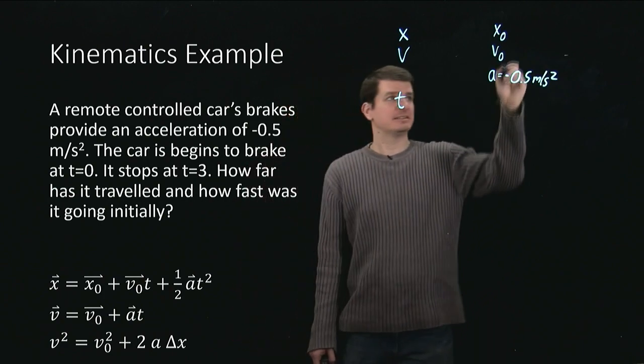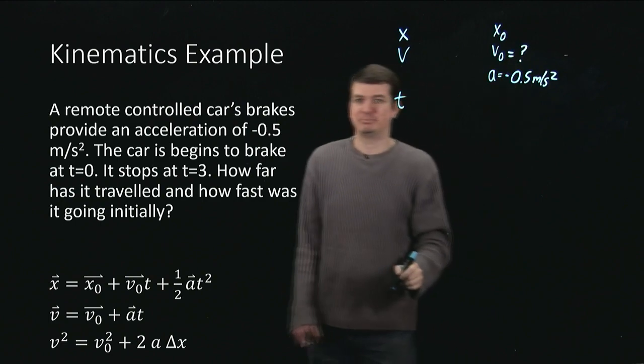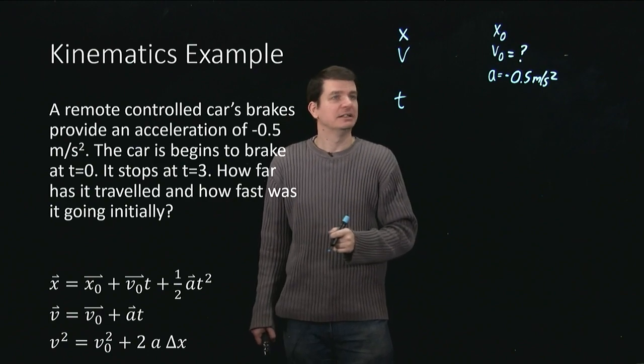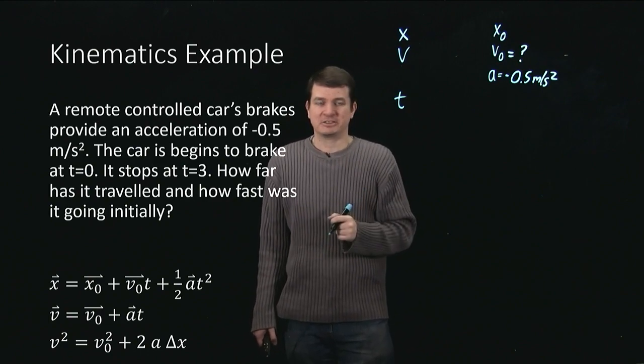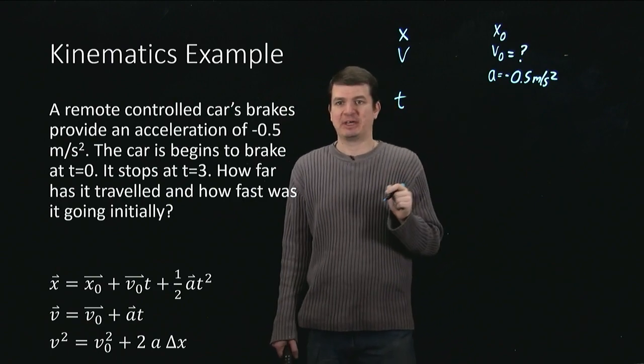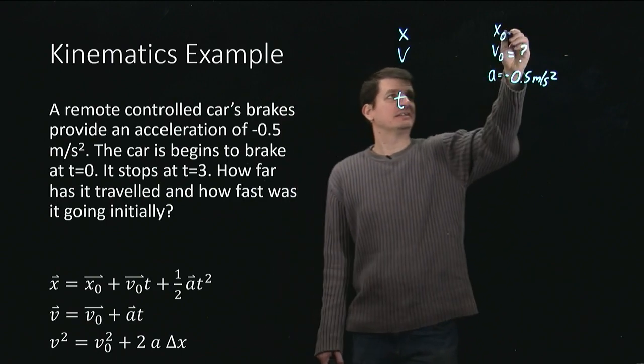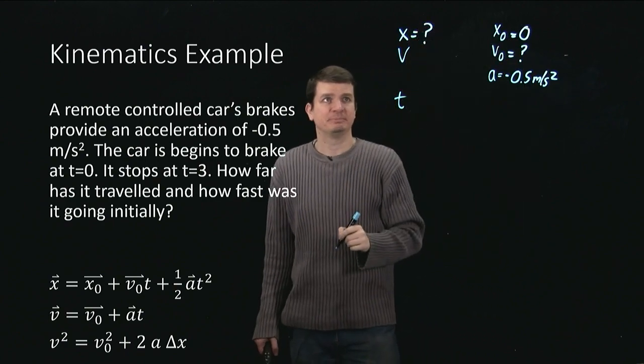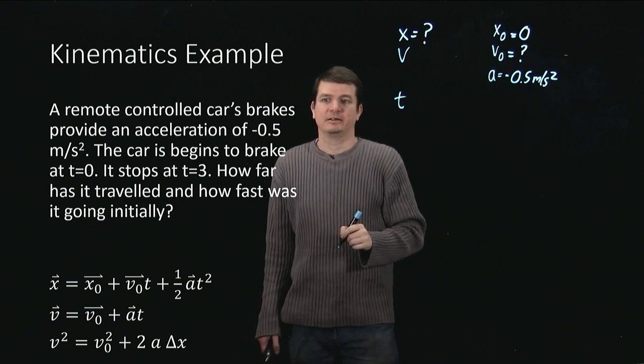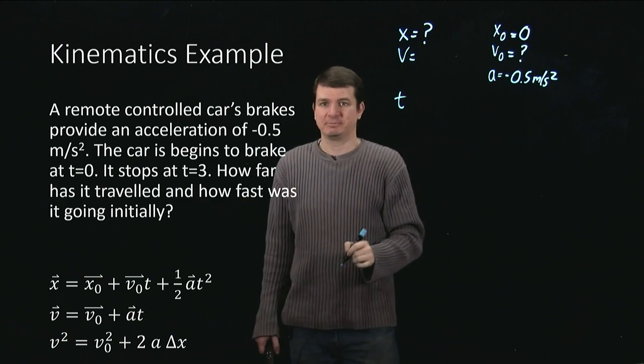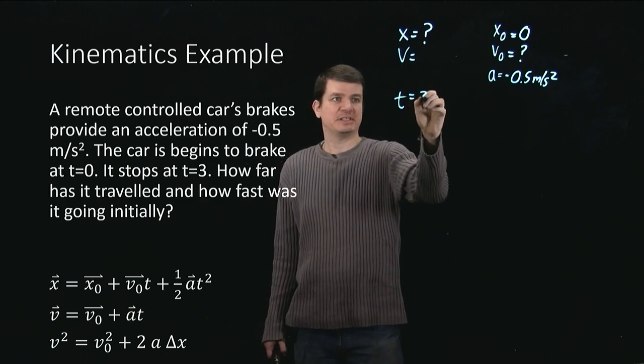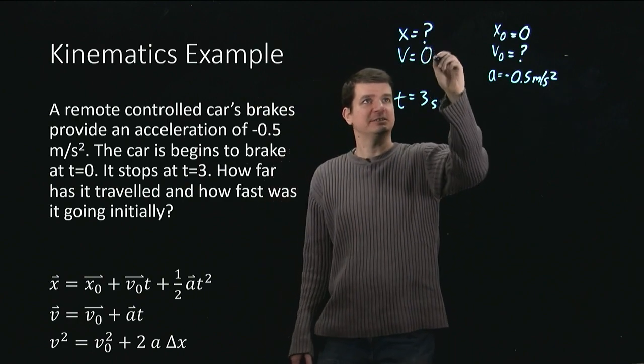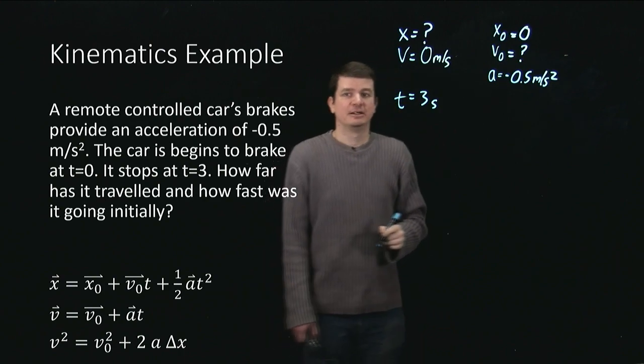The initial velocity is actually what we're looking for, or the initial speed now. I'm discarding information about directions because I don't have any to use. The initial position, actually, we're not going to care about. We want to know how far it travels from that initial position. So we'll go ahead and set that to be 0. And then we're interested in knowing how far we end up. And we know, actually, the final velocity at a time of 3 seconds, because the final velocity says, oh, the car came to a stop. So that's 0 meters per second.